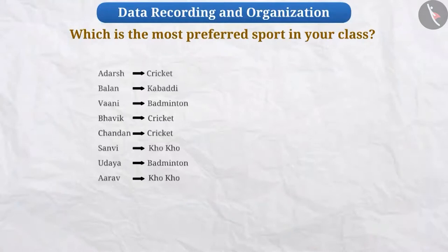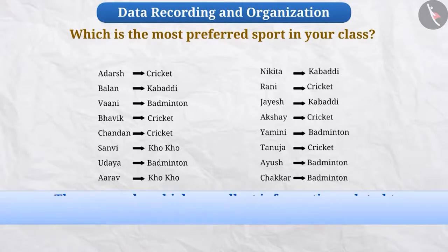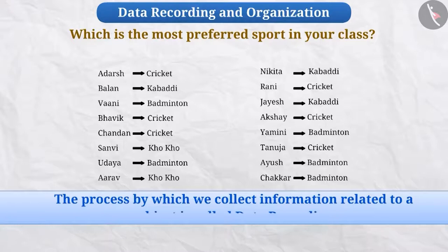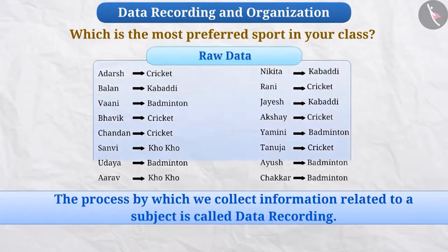For convenience, we store the information received on a medium such as a notebook. As shown here, the student's name and their preferred sport is given. The process by which we collect information related to a subject is called data recording. From this, we get the raw data.